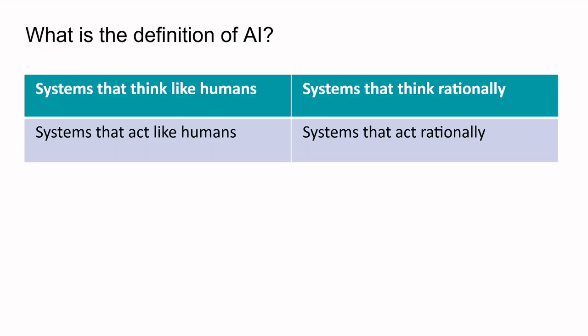If we talk about the definition of AI, in simple terms: systems that think like humans, or systems that think rationally — meaning things should be logically correct — systems that act like humans, or systems that act rationally. That is the definition of AI in simple terms.